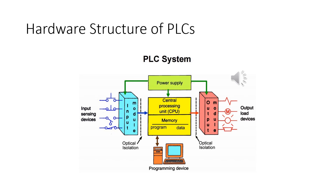In this slide, we have a drawing representing the PLC system, which consists of a power supply and the CPU — the central processing unit of the PLC. It has memory space divided into program memory and work or data memory, in addition to the input module and the output module. The input module is where input devices are connected, and the output module is where the output devices being controlled are connected. Finally, we have the programming device, which is normally a PC with a special application providing the programming environment of the PLC.